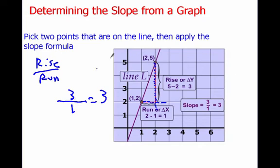Or we could do this the long way, where we do 5 minus 2. If I say this is x2, y2, and x1, y1 over here, I can do 5 minus 2 divided by 2 minus 1, which still gives me 3 over 1, which still gives me 3. So I can kind of just count spaces, or I can apply the formula.